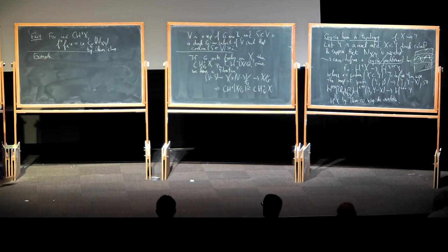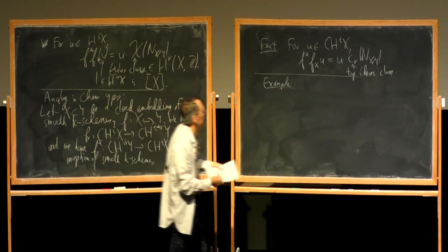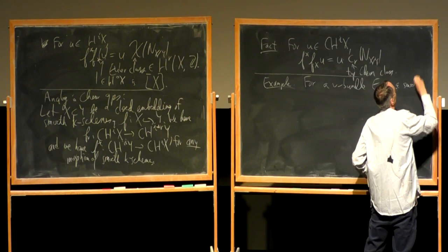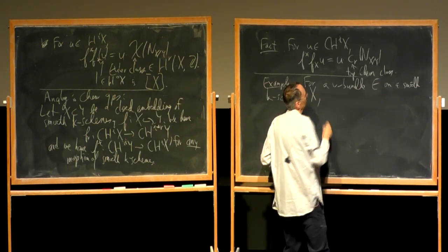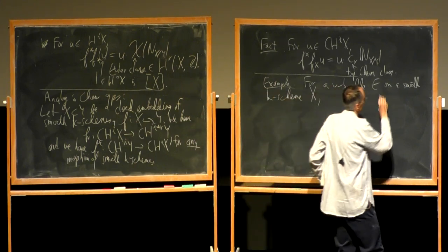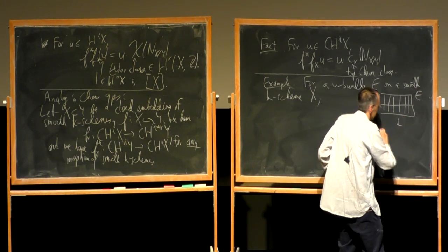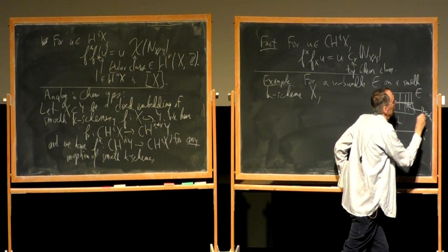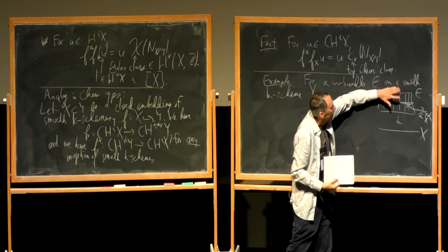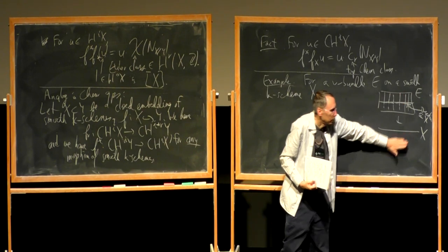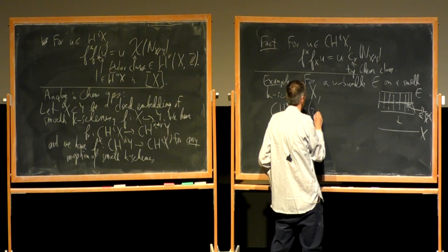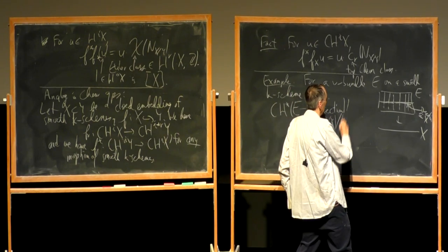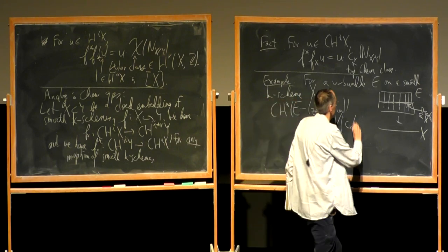A computation you can get from this: for any vector bundle E on a smooth k-scheme X — thinking of E also as a scheme, the total space of E — inside E is the zero section, isomorphic to X. A reasonable question is: what are the Chow groups of E minus the zero section? The Chow groups of all of E would just be isomorphic to the Chow ring of X, but the Chow ring of E minus the zero section is the Chow ring of X modulo the ideal generated by the top Chern class c_R of E, where R is the rank.